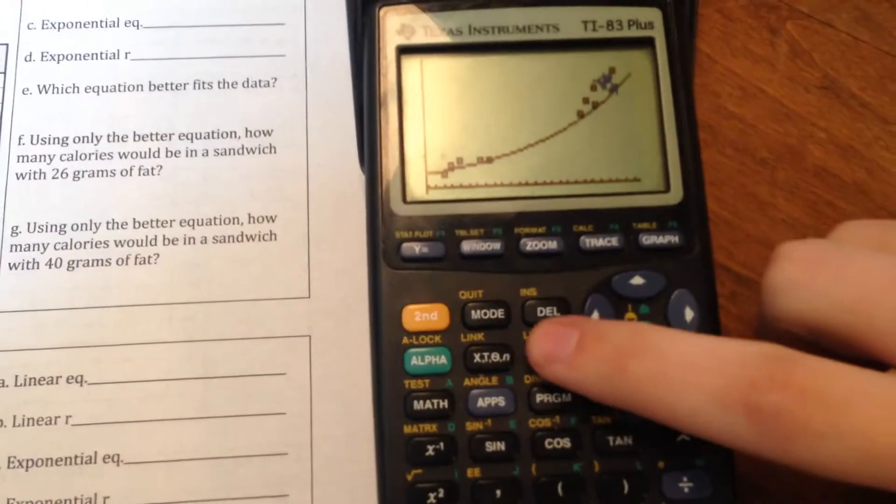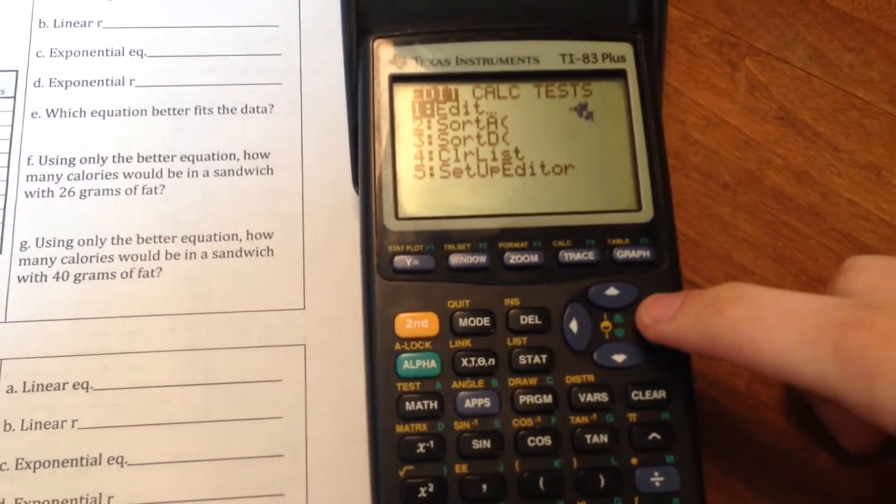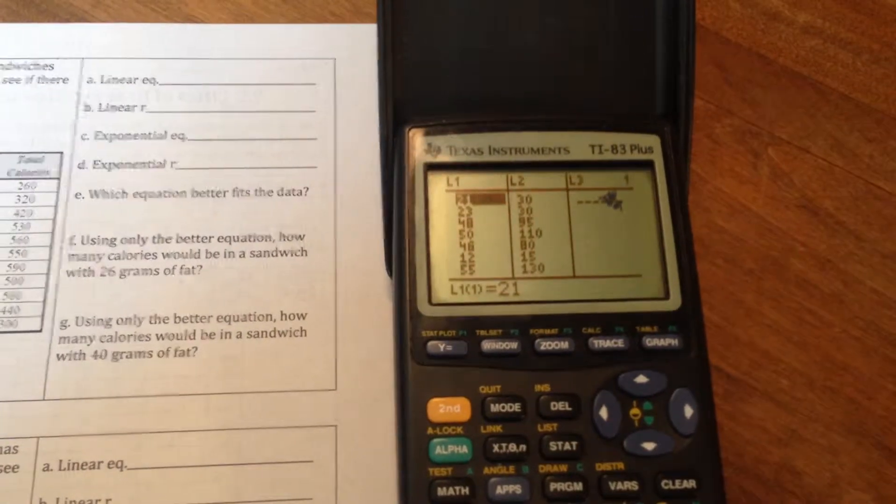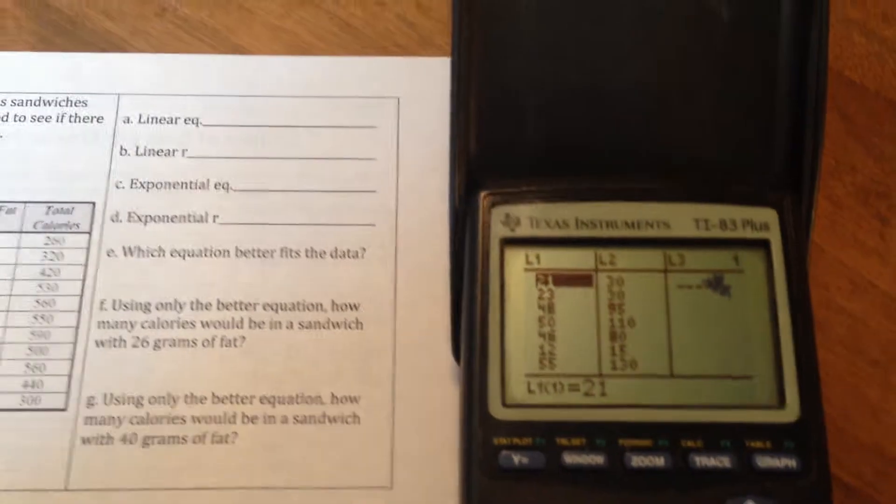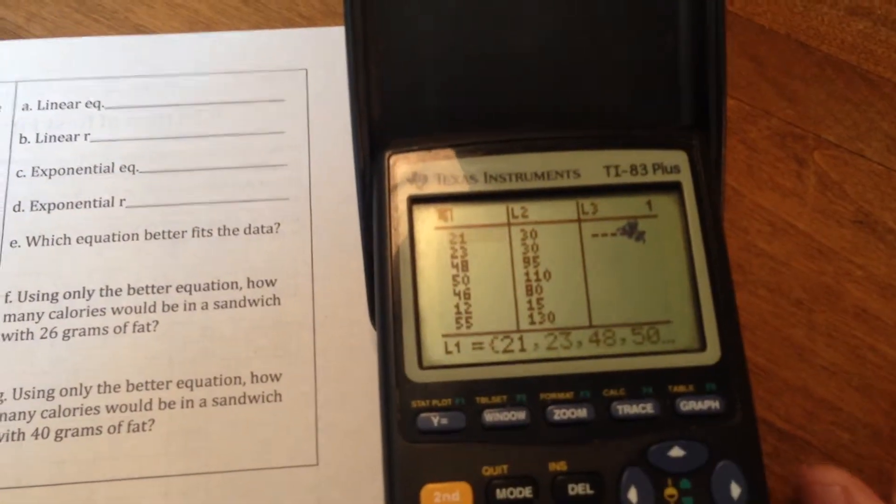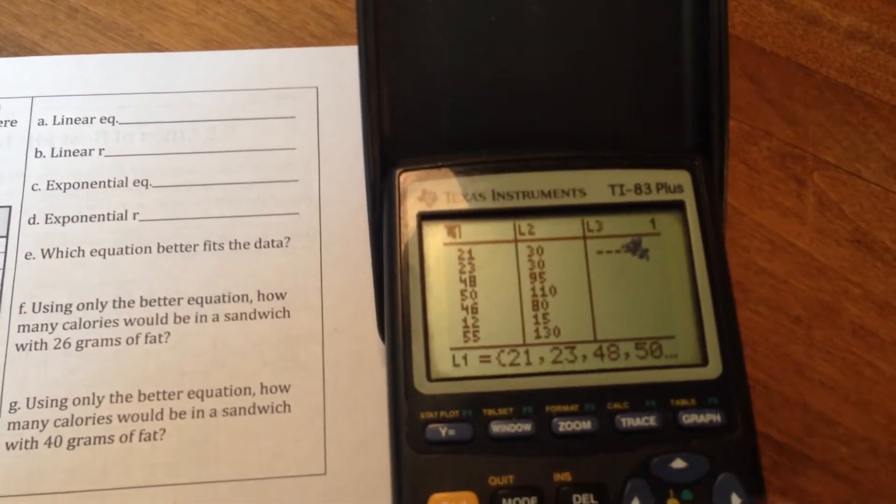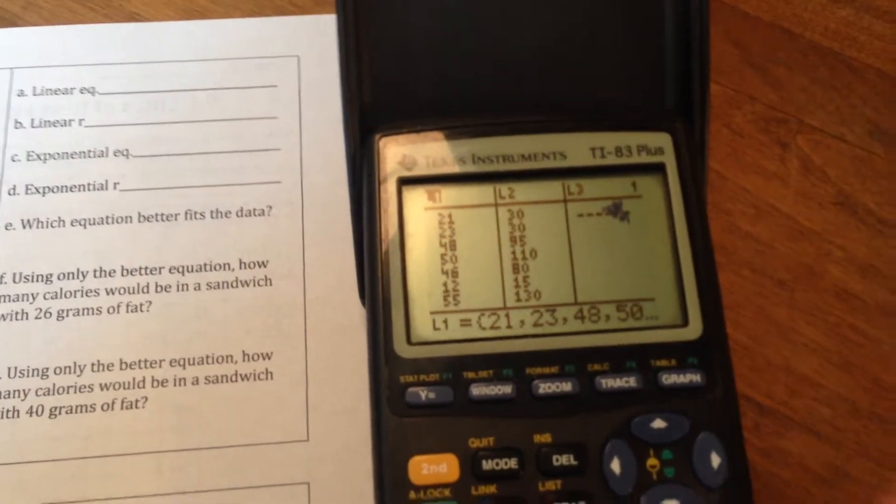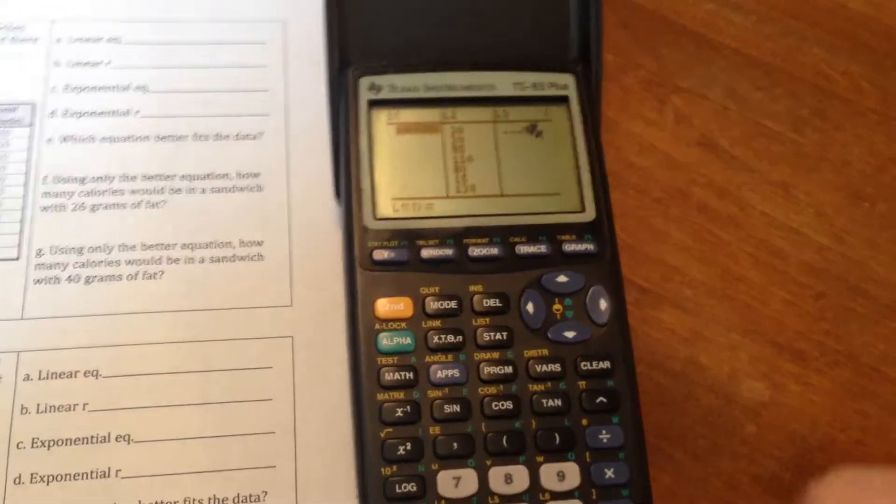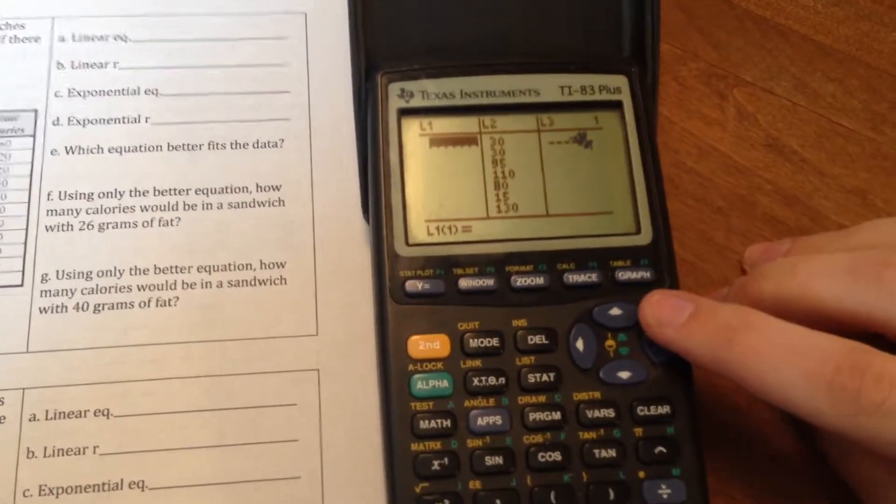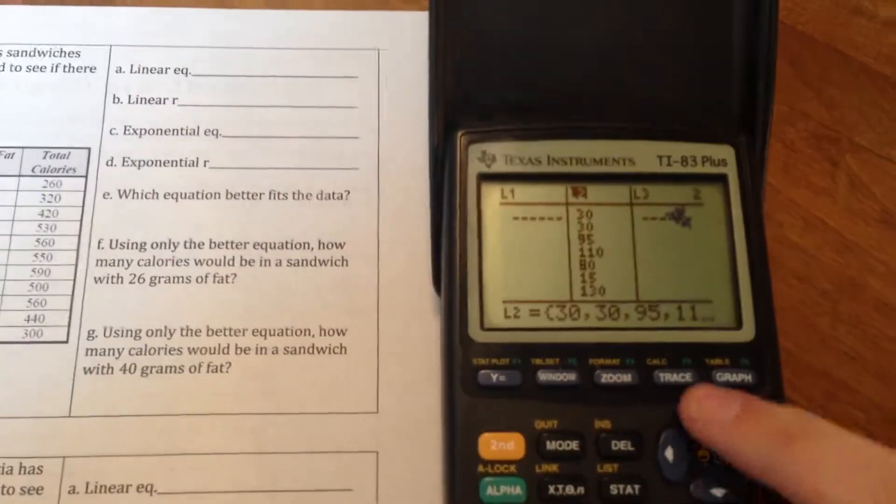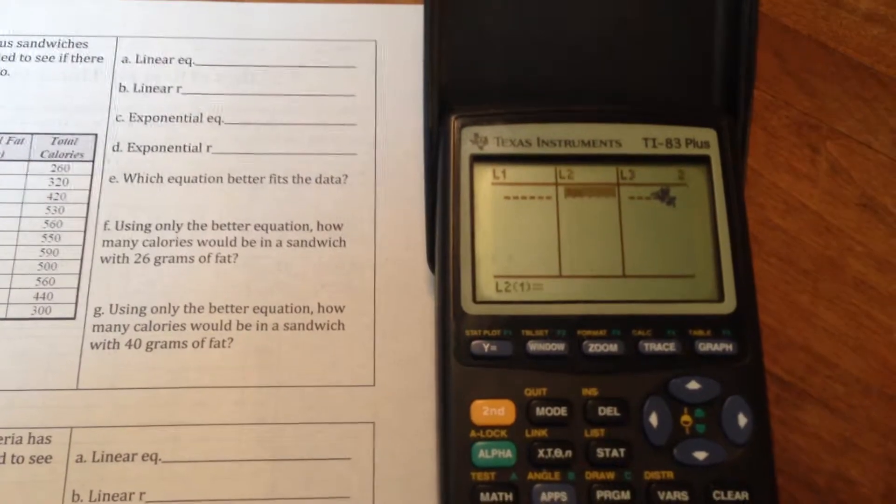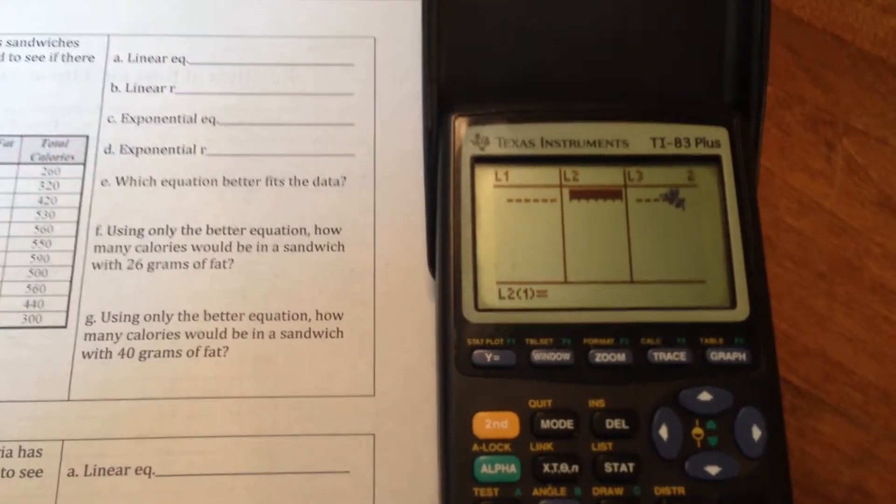So remember to type in the data, we're going to push stat, just push enter to edit. And now we're going to edit these two lists. Now, where a lot of you guys keep making mistakes is you highlight L1, and then you push delete. Do not push delete. That will totally erase the list, and it takes a little while to get it back. We just want to push clear, and then enter, and that will clear out the contents of your list rather than deleting the entire list altogether, including the L1 part. Again, go up and highlight L2, push clear, and then enter. And there we go. We've got clean lists.